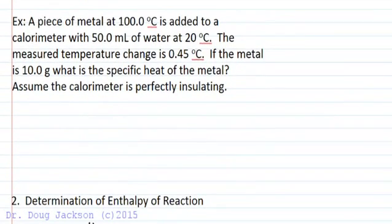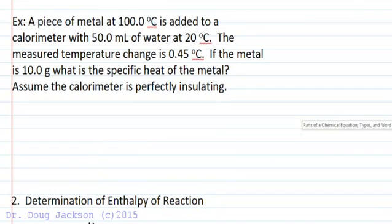So let's do an example. A piece of metal at 100 degrees Celsius is added to a calorimeter with 50 milliliters of water at 20 degrees Celsius. The measured temperature change is 0.45 degrees Celsius. And so if the metal is 10 grams, what's the specific heat?